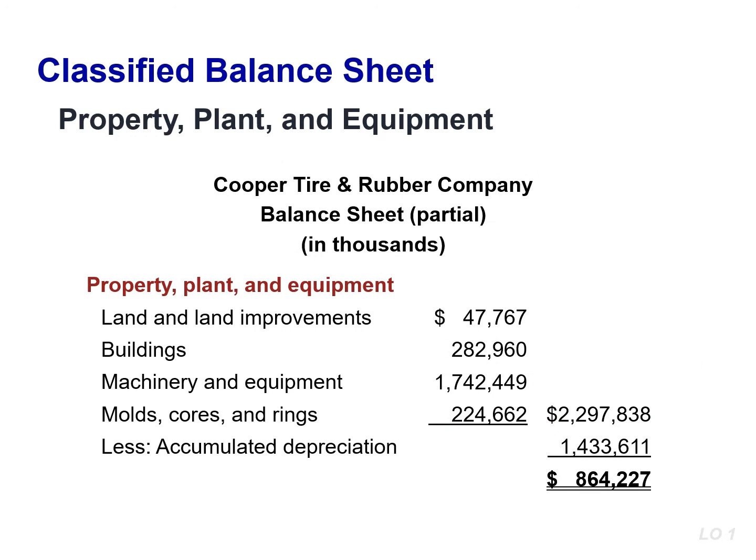This slide presents the property, plant, and equipment of Cooper Tire and Rubber Company. In this section, we list the long-term operational assets first: land and land improvements, then buildings, machinery and equipment, and finally molds, cores, and rings. We then list accumulated depreciation, which is a contra-asset account, appearing just after the accounts it offsets — PP&E. Book value is the difference between the cost of any depreciable asset and its accumulated depreciation.